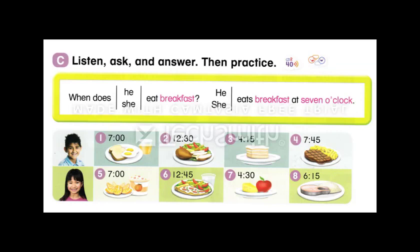5. When does she eat breakfast? She eats breakfast at 7 o'clock. 6. When does she eat lunch? She eats lunch at 12:45. 7. When does she eat a snack? She eats a snack at 4:30. 8. When does she eat dinner? She eats dinner at 6:15.